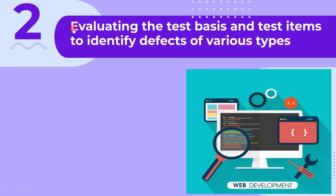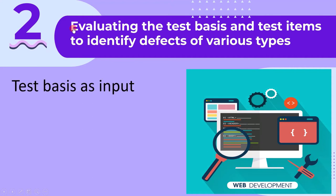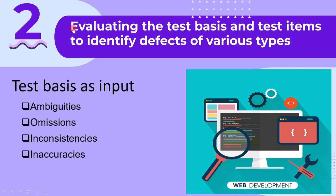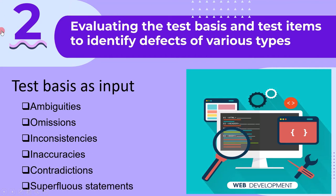The second main activity of test analysis is evaluating the test basis and test items to identify defects of various types. At the test analysis stage, we get the test basis as input for writing test cases. We can perform a review on the test basis to find ambiguities, omissions, inconsistencies, inaccuracies, contradictions, and superfluous statements. Therefore, the second main activity of test analysis is evaluating the test basis and test items to identify defects of various types.